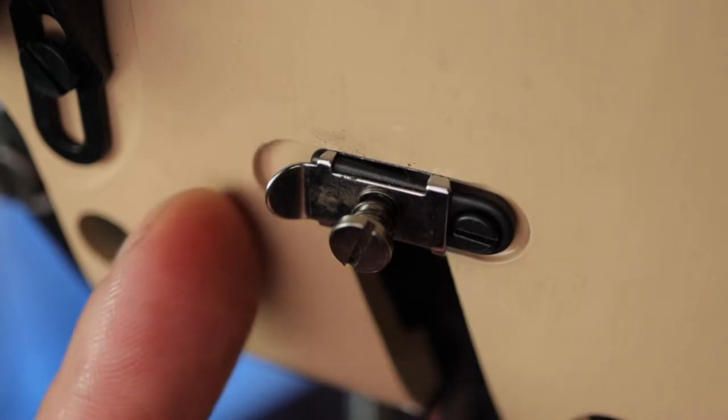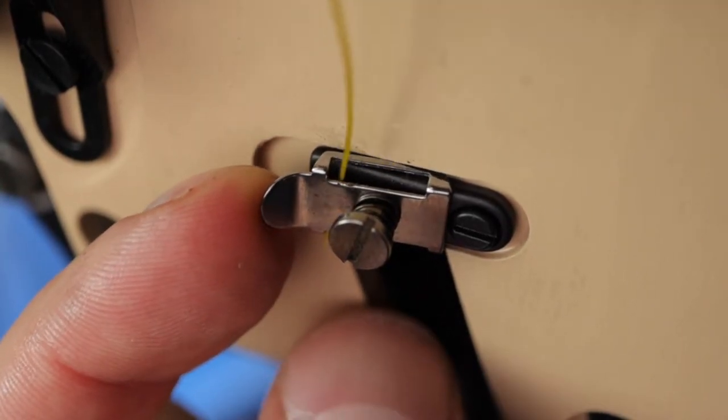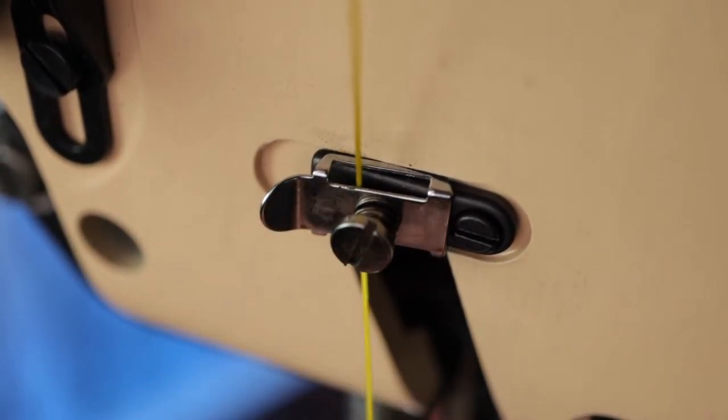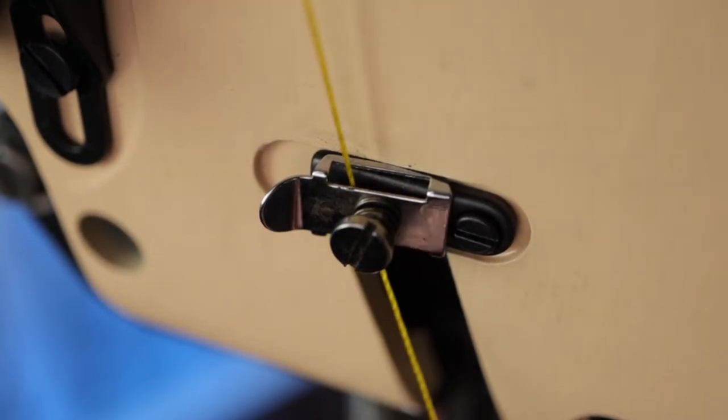As you go down, there is a spring-loaded face plate thread guide. Pull it forward and slide the thread downward through it, but make sure it is to the left of the screw.